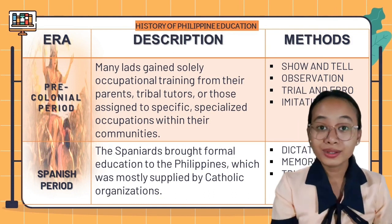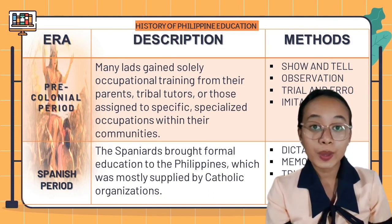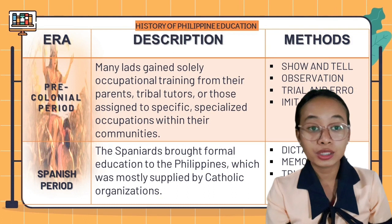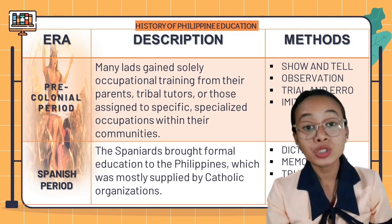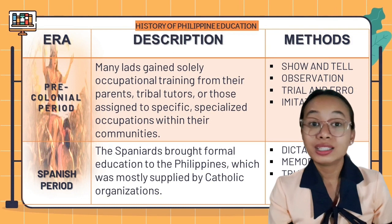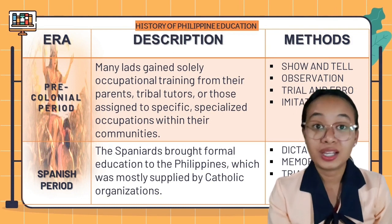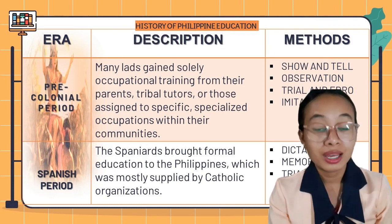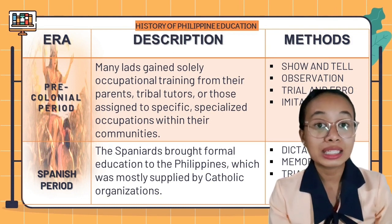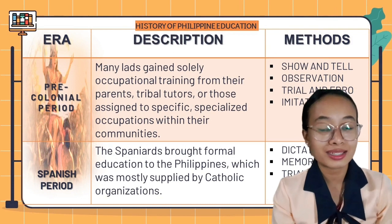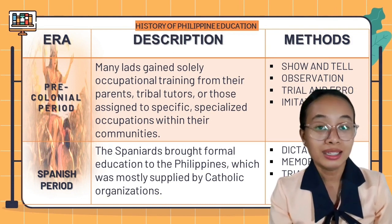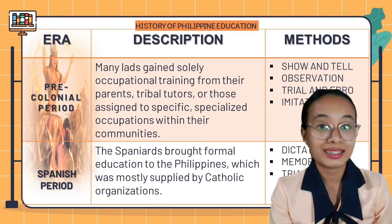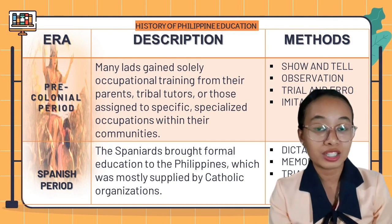During the Spanish period, the Spaniards brought formal education to the Philippines, which was mostly supplied by Catholic organizations. Upon learning the local languages and writing systems, they began teaching Christianity, the Spanish language, and Spanish culture.